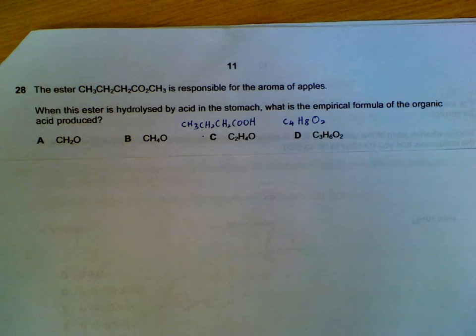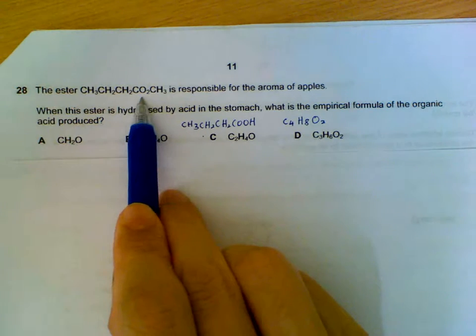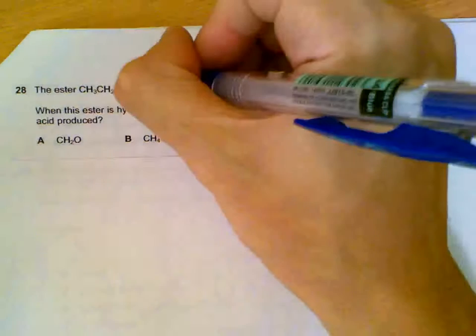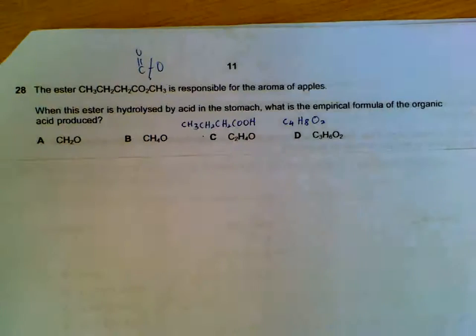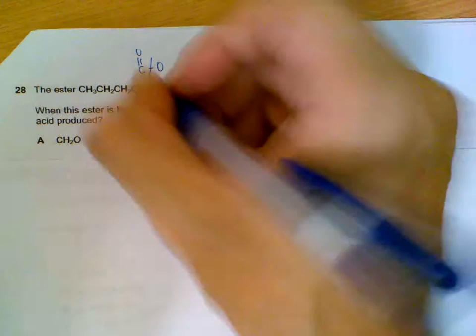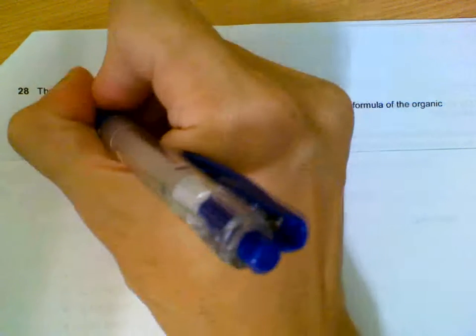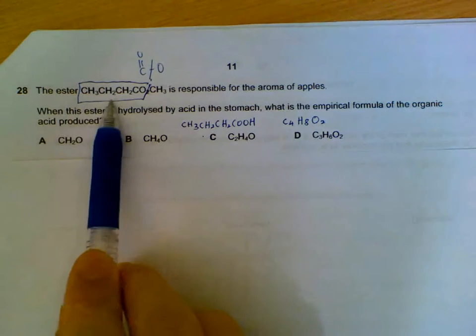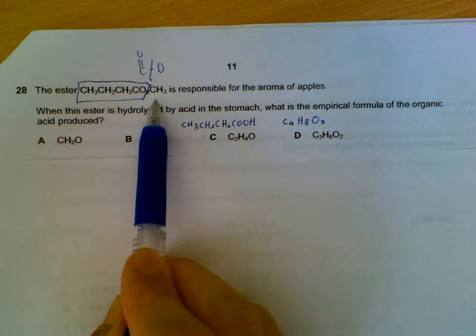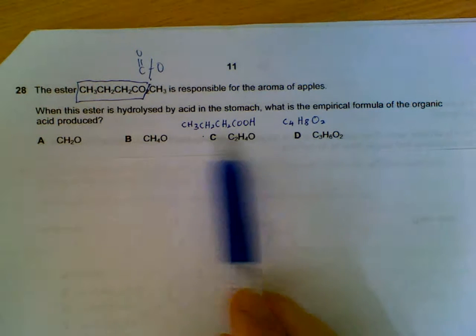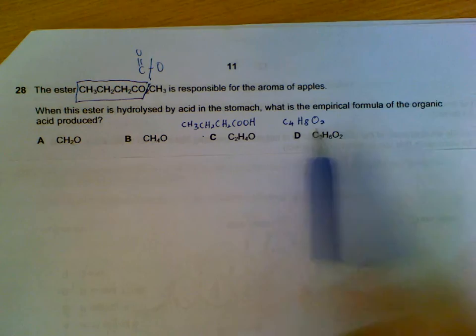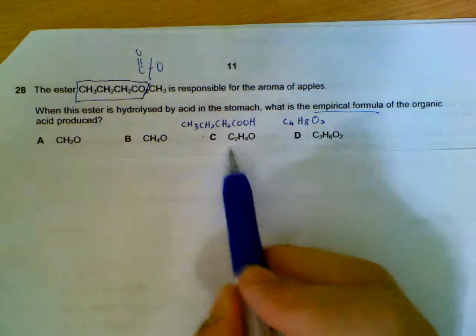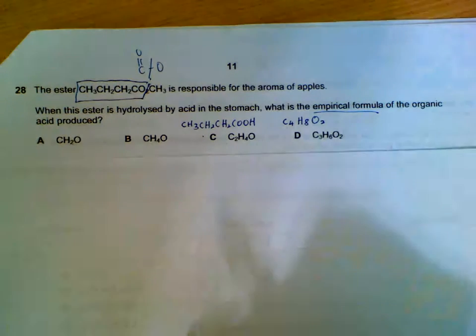28, there is an ester. The ester bond is here. So when we hydrolyze it, we are actually cleaving the ester bond. So if you visualize a C double bond O here, it will be split up. And we want the part that is the acidic part. So taking away one oxygen, this part is the acidic part. The one on the right side is the alcohol. And once we have the acid, this is the formula C4H8O2. But they want the empirical formula. We simplify further. We divide and drop by 2 to get the simplest ratio.